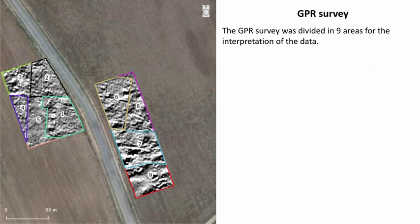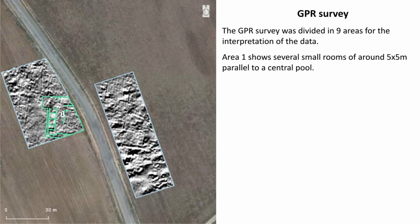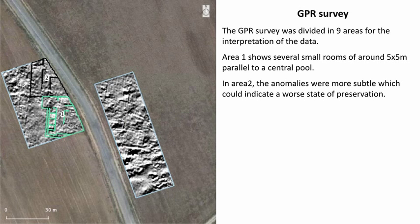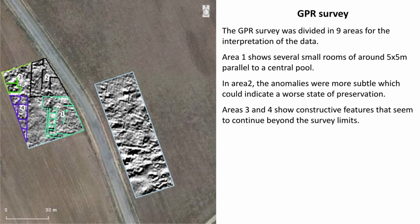The GPR survey was divided into 9 areas for the interpretation of the data. Area 1 shows several small rooms of around 5 by 5 meters parallel to a central pool. In Area 2, the anomalies were more subtle, which could indicate a worse state of preservation. Areas 3 and 4 show constructive features that seem to continue beyond the survey limits.